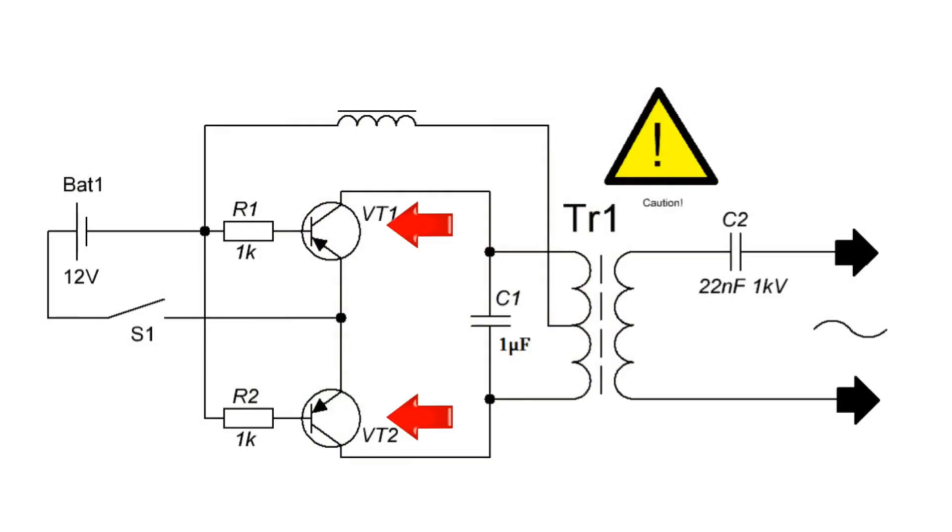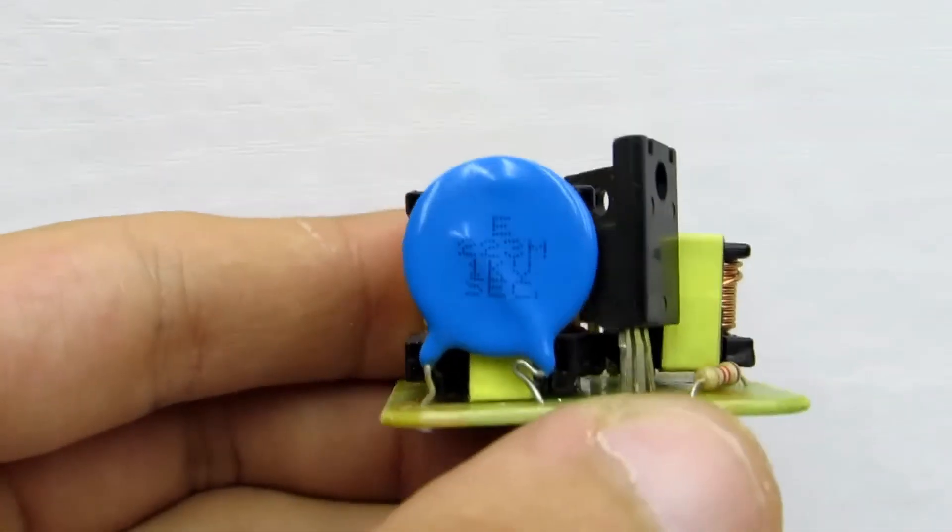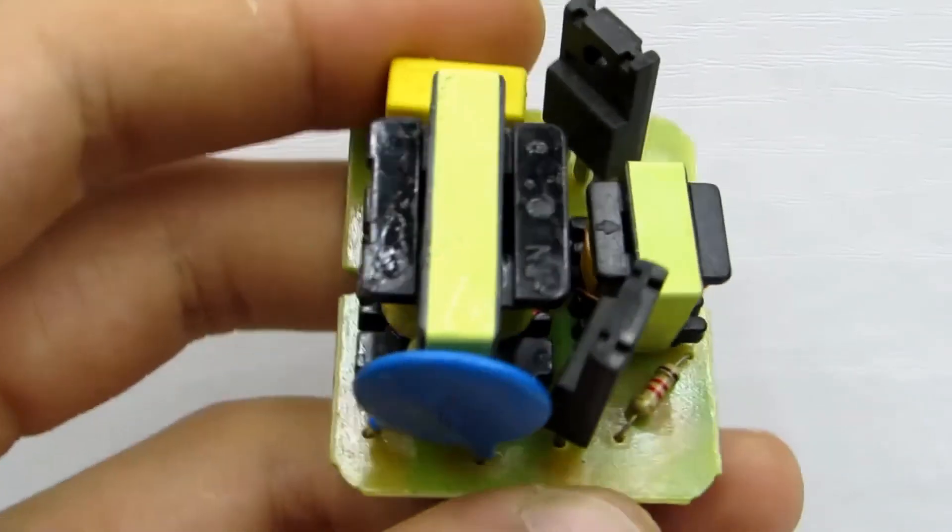The circuit is built on the basis of NPN bipolar transistors. A capacitor is connected in series with the secondary winding at the output to limit the maximum current in case of a short circuit, otherwise the transistors will burn out. In other words, it's a primitive short circuit protection.